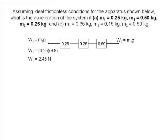When we input our values, we can see the force for weight 1 is 2.45 newtons. After inputting our values for W2, we find the force to equal 4.9 newtons. Now that we know both outside forces, we can find the acceleration of the system.